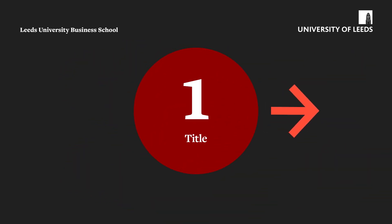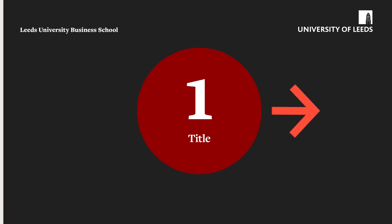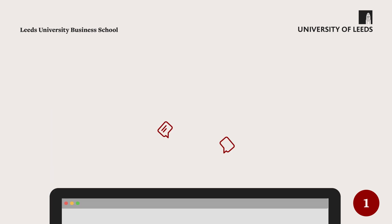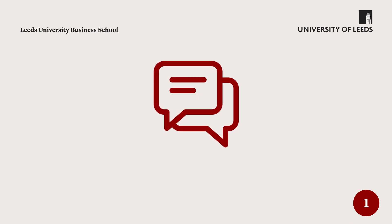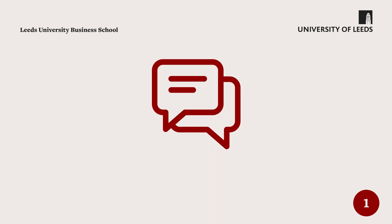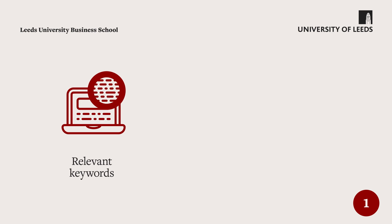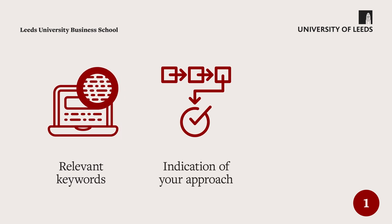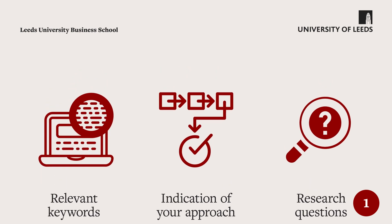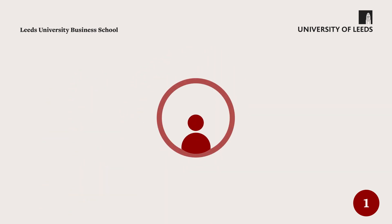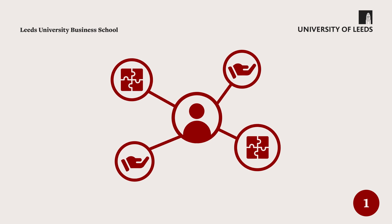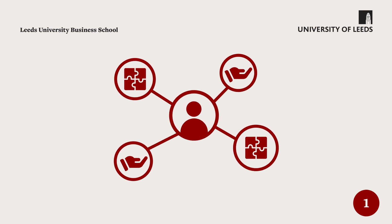Step 1: Create your title. You need a succinct description of your research to use as a working title. Beyond simply describing the topic, your title should include relevant related keywords, an indication of your approach and your research questions. This will help the department and research centre understand how your research will support and complement their current interests.